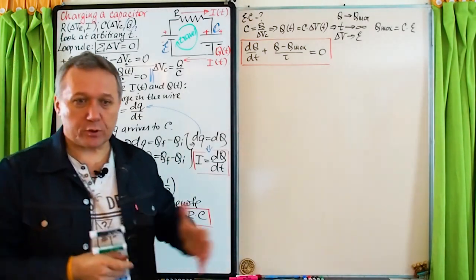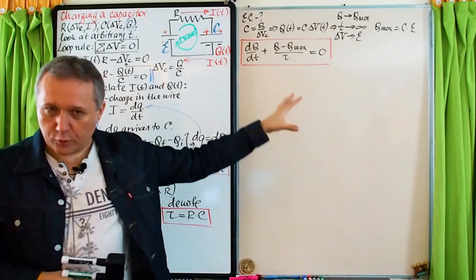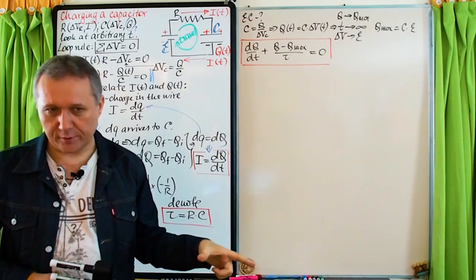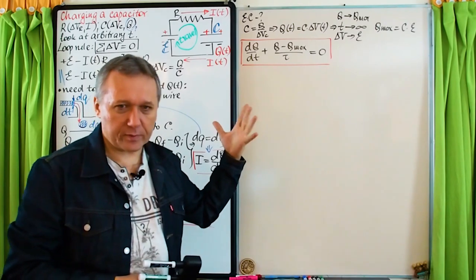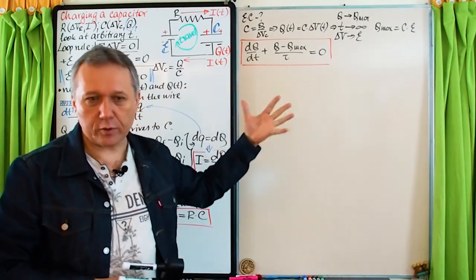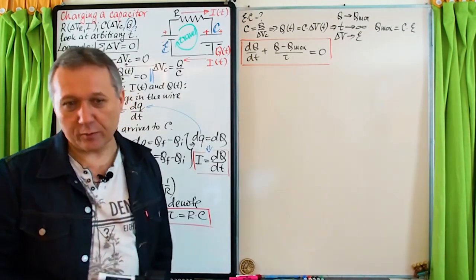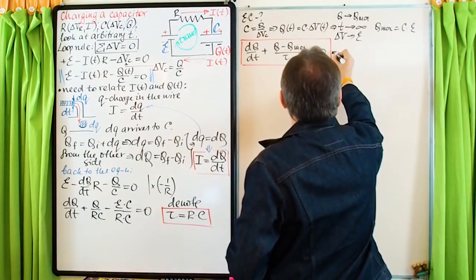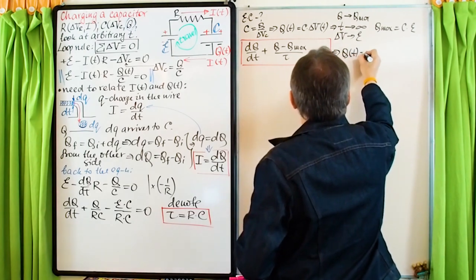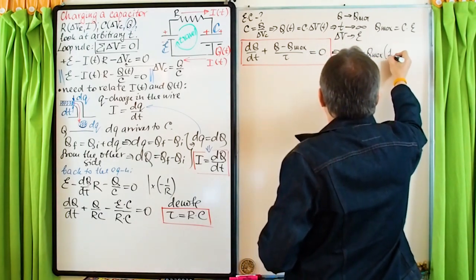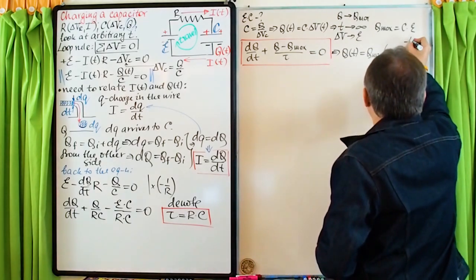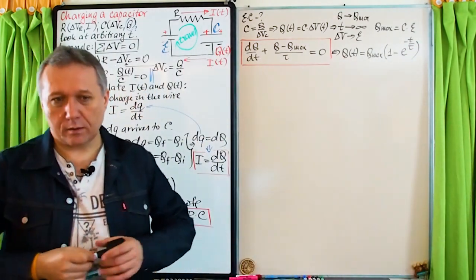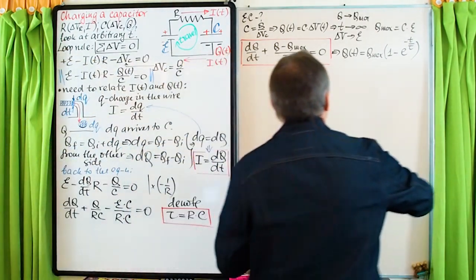Some of you may know how to solve this differential equation — it's quite straightforward. The actual solution is at the end of the presentation. The solution is: Q(t) = Q_max · (1 − e^(−t/tau)).